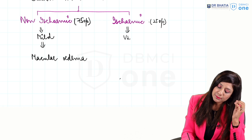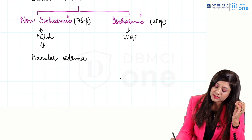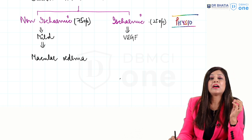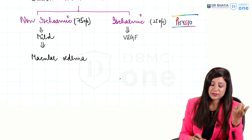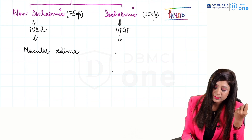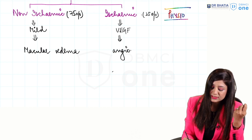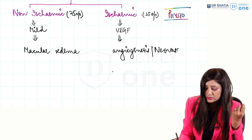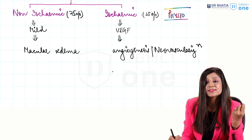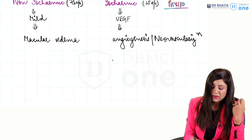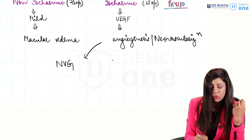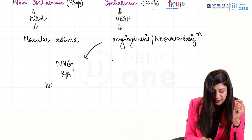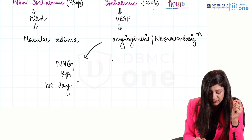In the ischemic variety, there is a lot of ischemia with release of vascular endothelial growth factor (VEGF) - this is your integration with physiology. The release of VEGF is responsible for angiogenesis or neovascularization. This leads to a lot of neovascularization, which causes neovascular glaucoma in the patient.